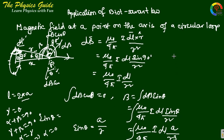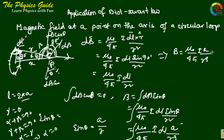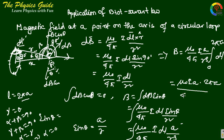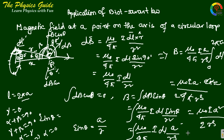Taking the constants out: B equals mu naught over 4 pi times I times A by R cubed, integrated with limit 0 to 2 pi A. This gives mu naught times I times A times 2 pi A divided by 4 pi R cubed. The pi terms cancel, yielding mu naught I A squared by 2 R cubed.